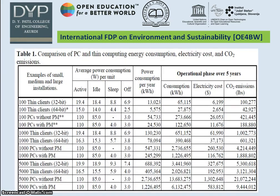Here is a table showing a comparison of PC and thin client energy consumption, electricity cost, and CO2 emissions. The leftmost column lists different models of PCs and thin clients. The second column shows average power consumption in watts per unit across all four stages — active, idle, sleep mode, and switched off. Based on this, annual power consumption is calculated. The last column shows the operational phase over 5 years, and if we analyze the CO2 emissions column, the values for thin clients are much less compared to normal PCs, clearly demonstrating thin client's CO2 emission advantage.